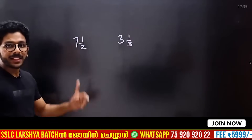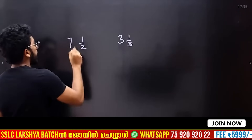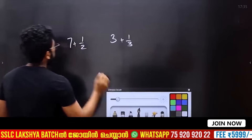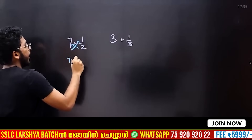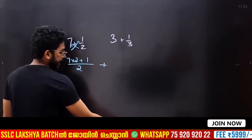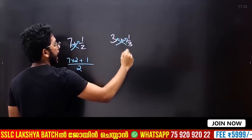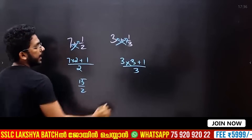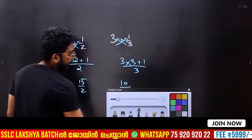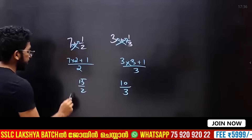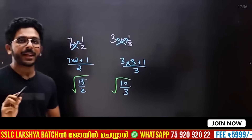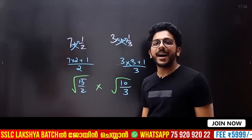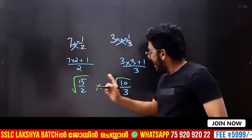This involves mixed fractions. The numbers are 7 plus 1 by 2, and 3 plus 1 by 3. We cross multiply: 7 into 2 plus 1 divided by 2 for the first number, and 3 into 3 plus 1 divided by 3 for the second. That gives 15 by 2 and 10 by 3. These two roots multiplied — you can answer with addition, subtraction, multiplication, and division.